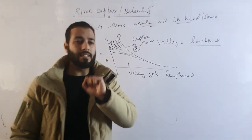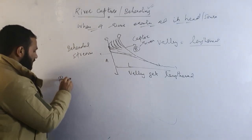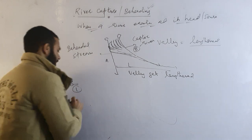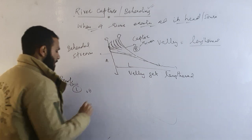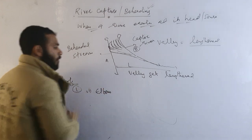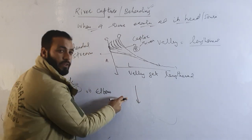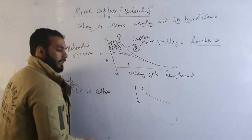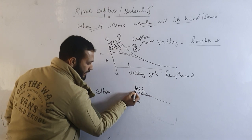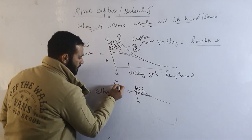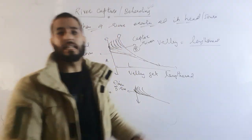If anyone asks what is the proof or evidence that a river has been captured by another river, there are two proofs. Number one is the elbow of the river. If a river was first moving in one direction and then bends sharply where the second river captured it, this bend is called the elbow of the river. If you find an elbow, it means the river has been captured.